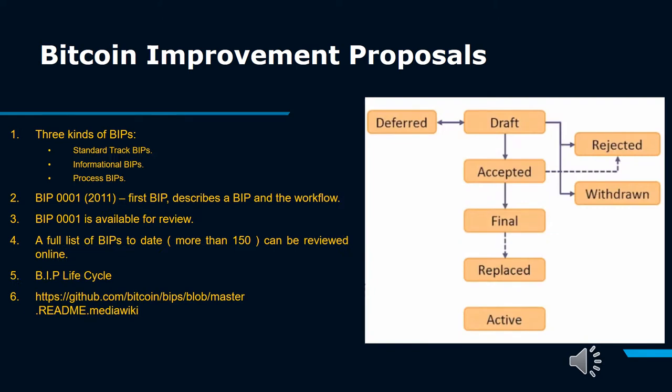The first BIP, BIP-0001, was submitted by Amir Taki on August 19, 2011, and described what a BIP is. A Bitcoin Improvement Proposal, BIP, is a design document for introducing features or information to Bitcoin. The BIP should provide a concise technical specification of the attribute and a rationale for the feature. This is the standard way of communicating ideas since Bitcoin has no formal structure.